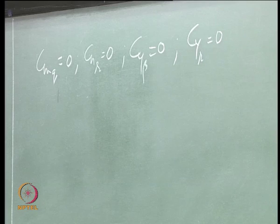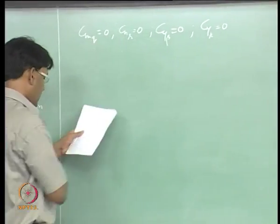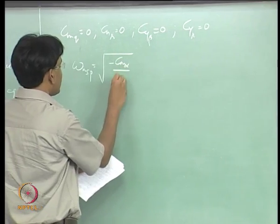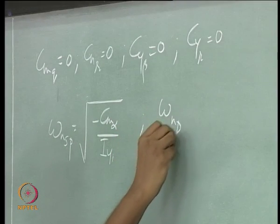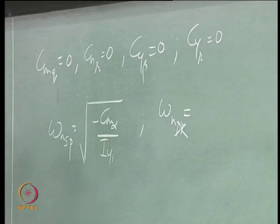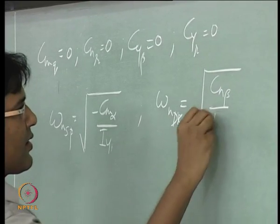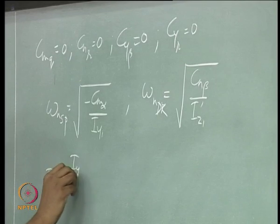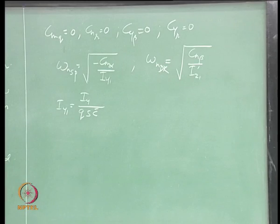Now he defines the two frequencies corresponding to short period mode and the Dutch roll mode in terms of whatever parameters are left now. So omega n SP short period mode frequency, Dutch roll mode frequency given by. This iy1 is iy over q s c bar. This q is the dynamic pressure.